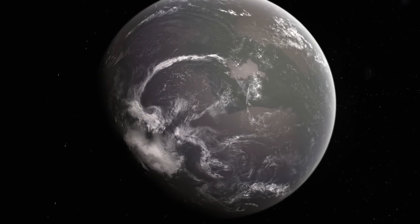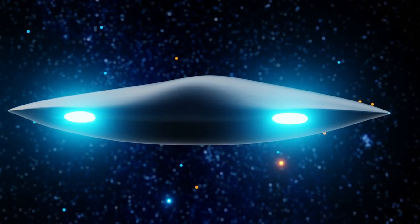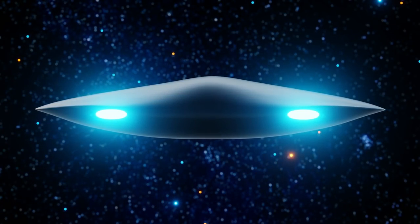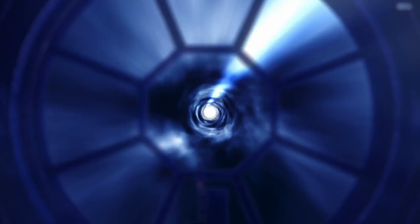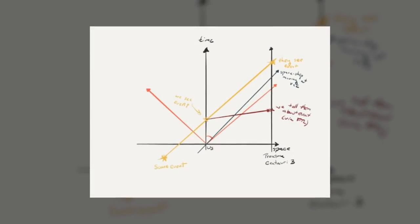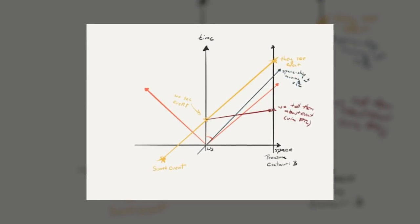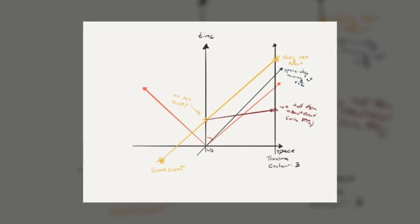But neither we nor Proxima Centauri is moving at the speed of light. The aforementioned spaceship is, however. For them, they are at rest too. If they drew their own space diagram with their own axis, their time axis will be aligned with the ship's trajectory.